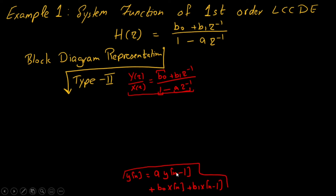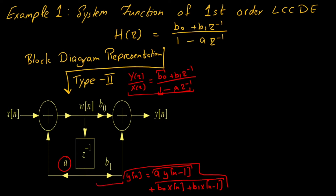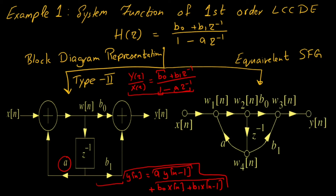The block diagram representation of this difference equation in type 2 form is shown here, where a·y(n−1) is expressed on the left side, and in type 2 the zeros are expressed on the right side. Similarly, the signal flow graph for this first-order system is also given here. We express x(n) and y(n) as nodes, and the four junction points are also included as nodes. The branches are relayed here with equivalent multiplications: a, b1, and so on.